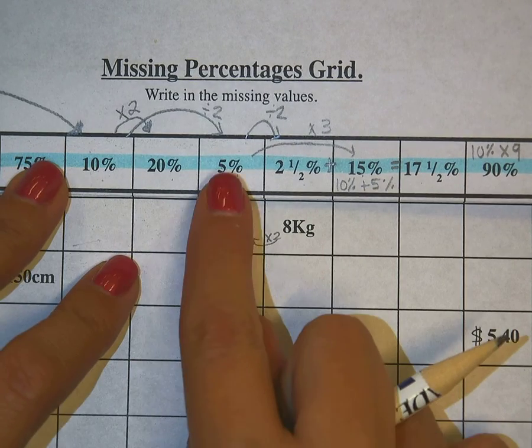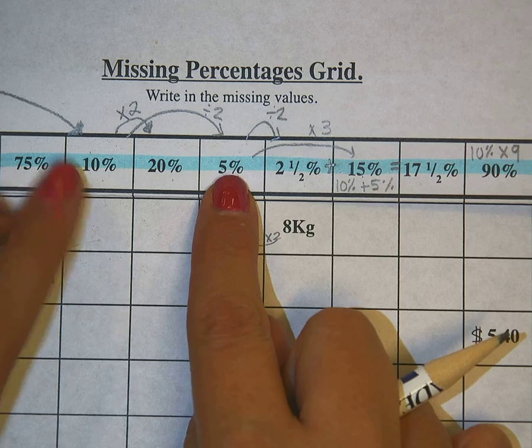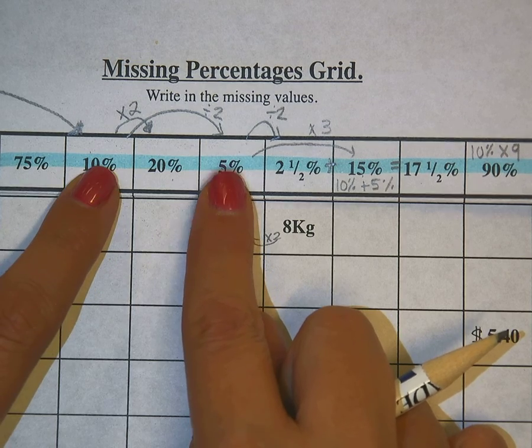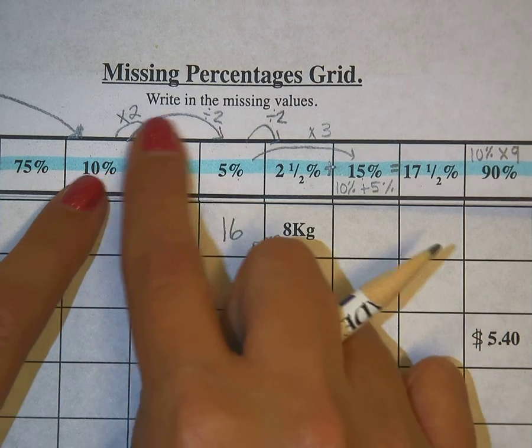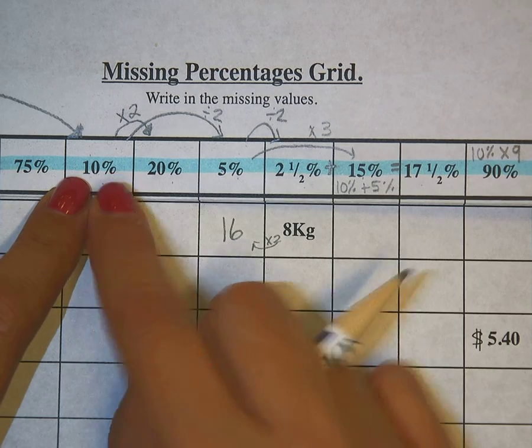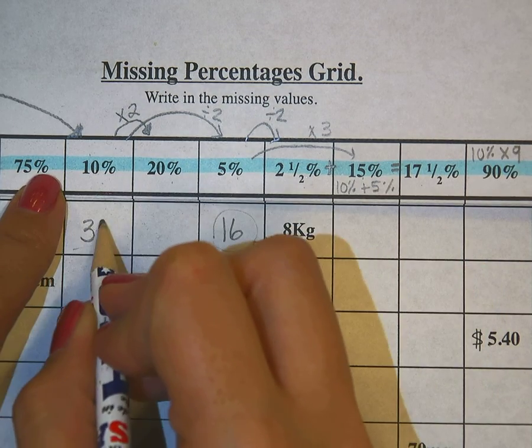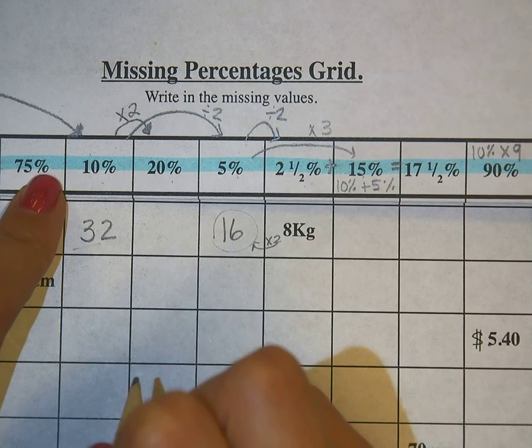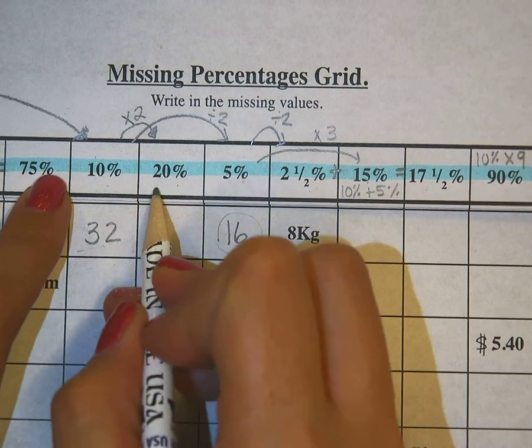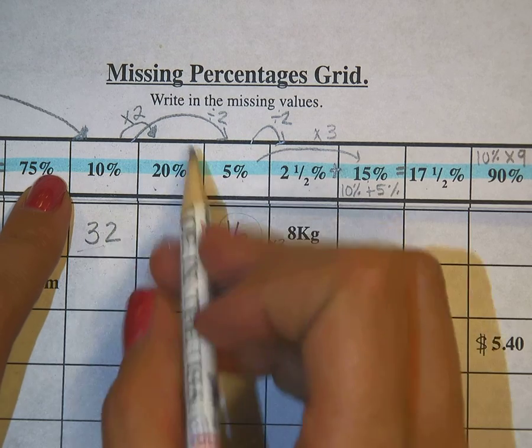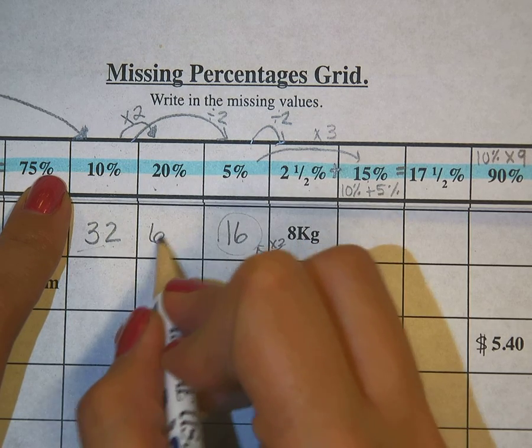Now, I know 5%, and I'm going to do 5 to 10%, and I know that from 5 going to 10 is just times 2. So that means this can also be multiplied by 2, and that's 32. That's my 10%. 10% to 20% is times 2, so 32 times 2 is 64.